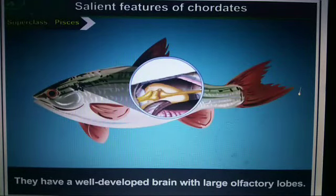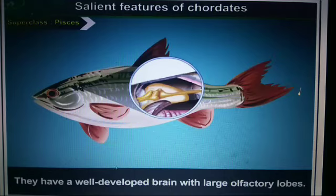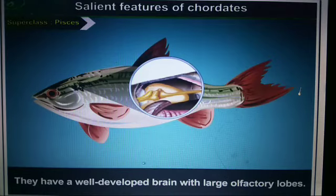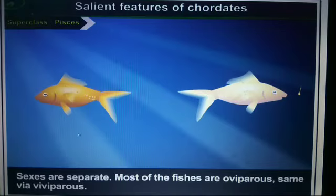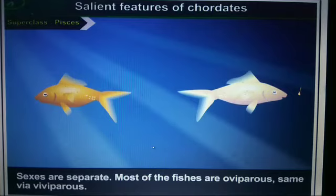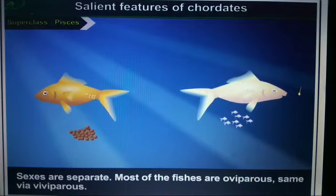Pisces have a well-developed brain with large olfactory lobes. The sexes are separate. Most of the fishes are oviparous, while some are viviparous. Viviparous means they give direct birth to young ones, whereas oviparous means they lay eggs.